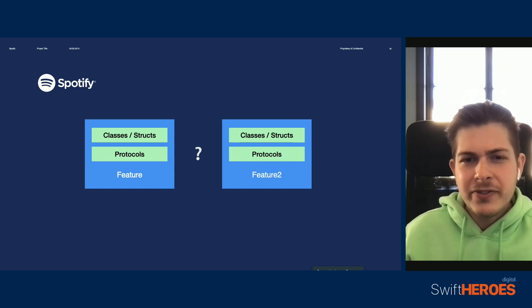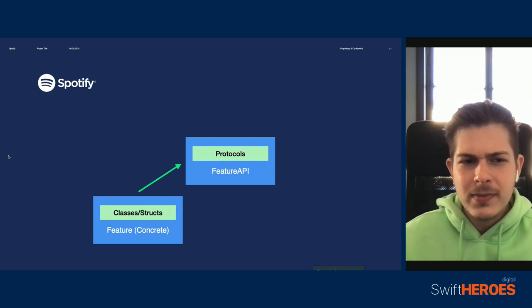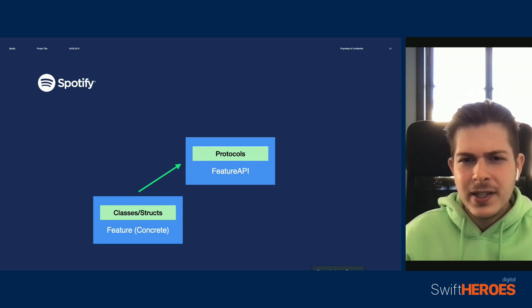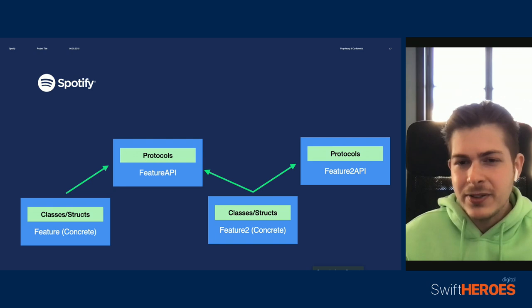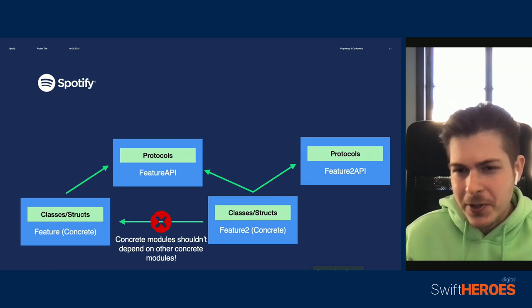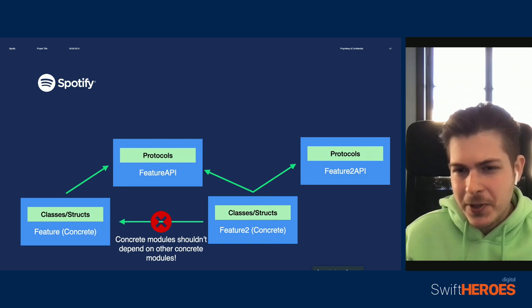So our first step towards a level four app is to divide our modules into two. Instead of having a single module that contains everything, we are going to grab everything that is meant to be referenced — like protocol APIs — and move them to a separate API module. If a different feature wants to reference those protocols, then their concrete module can freely depend on the relevant API module. This is the only thing they are allowed to depend on — they should never depend on the concrete implementation modules. This ensures that the modules are properly isolated from each other in the dependency graph, preventing them from being invalidated between builds.